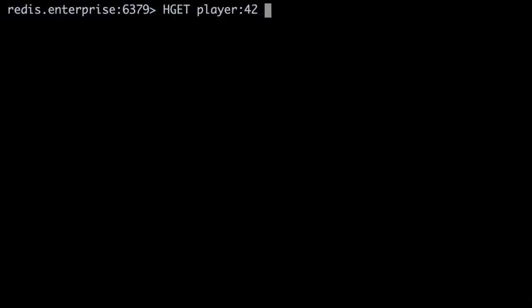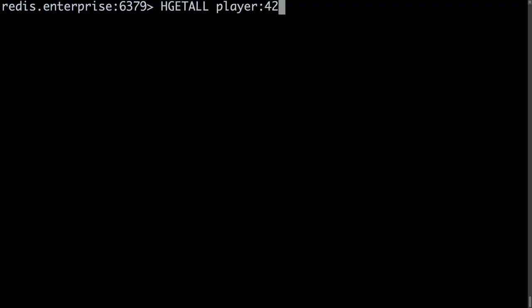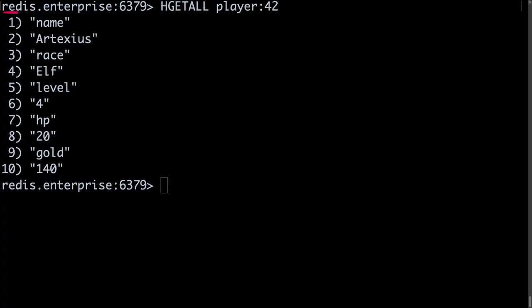Getting data from a hash is just as easy as setting it. Suppose we need to retrieve Artexius's level. For that, we'll need to use the hget command. The command is hget player colon 42 and then the field we want, level. To get all the fields and values from a Redis hash, use the hget all command. We'll run hget all player colon 42. This will return all fields and values contained within the hash.